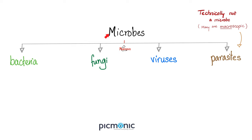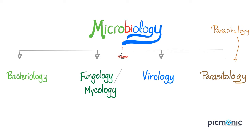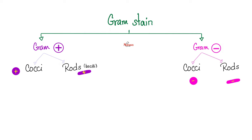Let's talk about cellulitis and abscess. Remember that microbes are bacteria, fungi, viruses, or parasites - that's why microbiology studies bacteriology, mycology, virology, and parasitology. We use the gram stain to differentiate between many types of bacteria. If they stain purple, we call them gram-positive, because they have a thick peptidoglycan cell wall. But if they stain pink, because they lack a thick peptidoglycan cell wall, they are called gram-negatives.